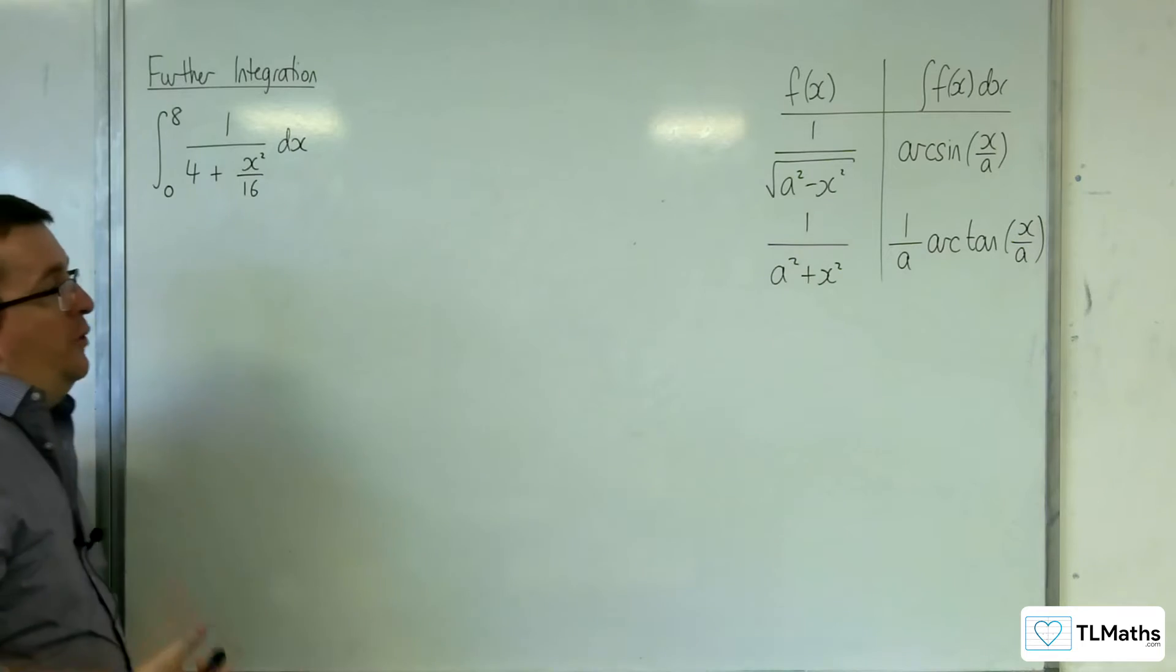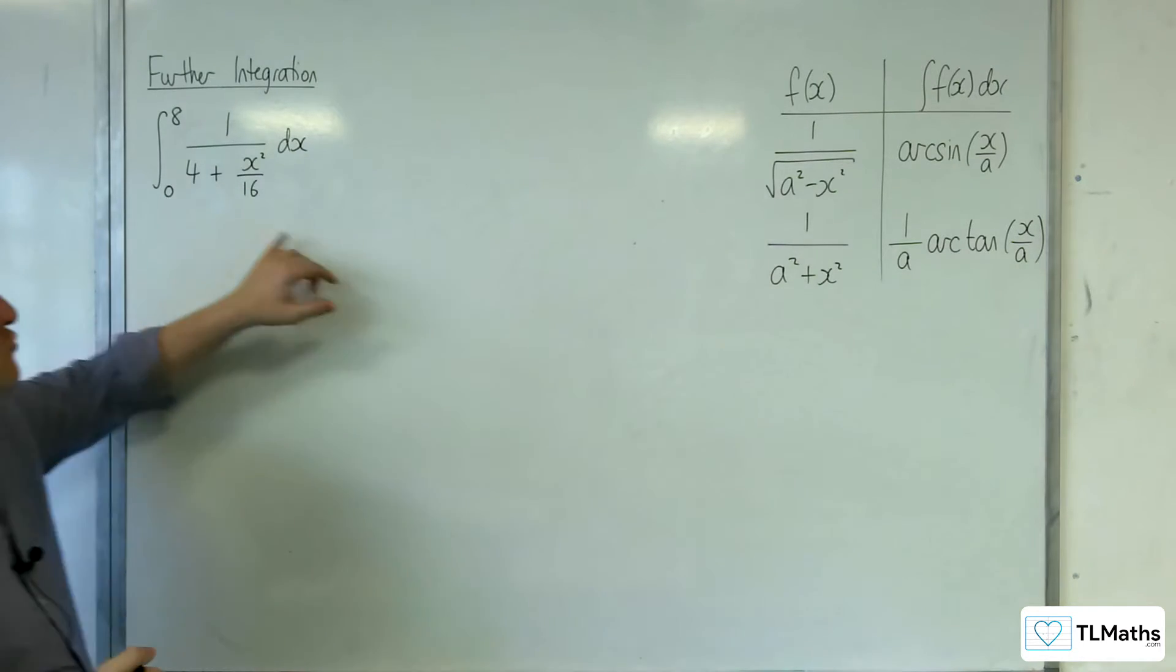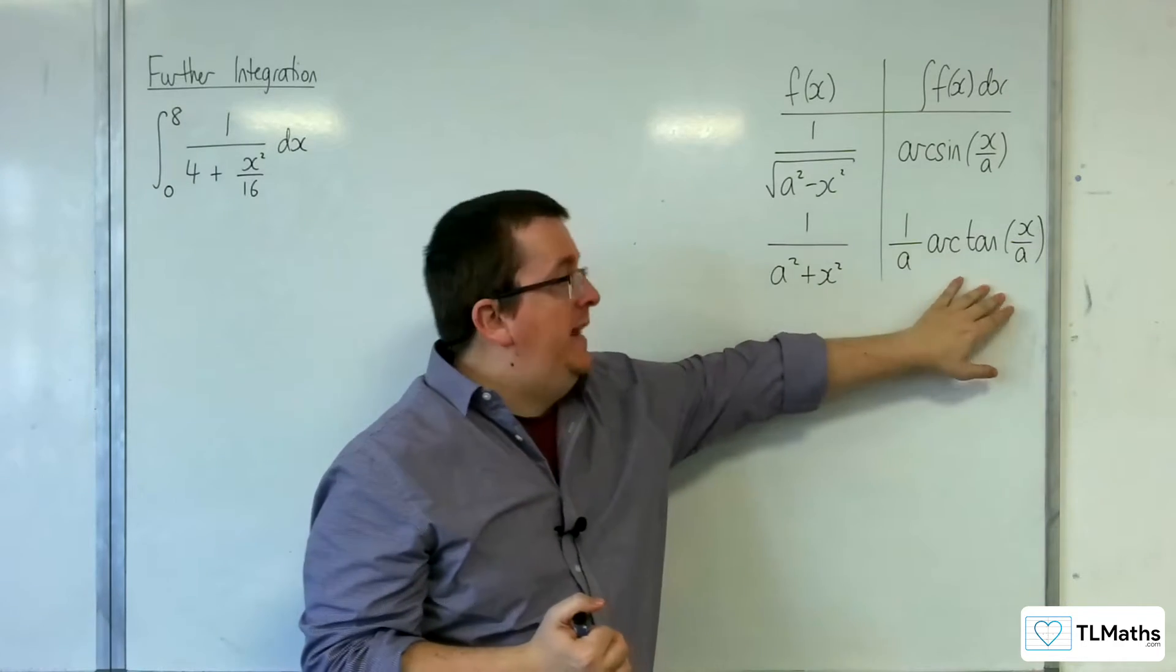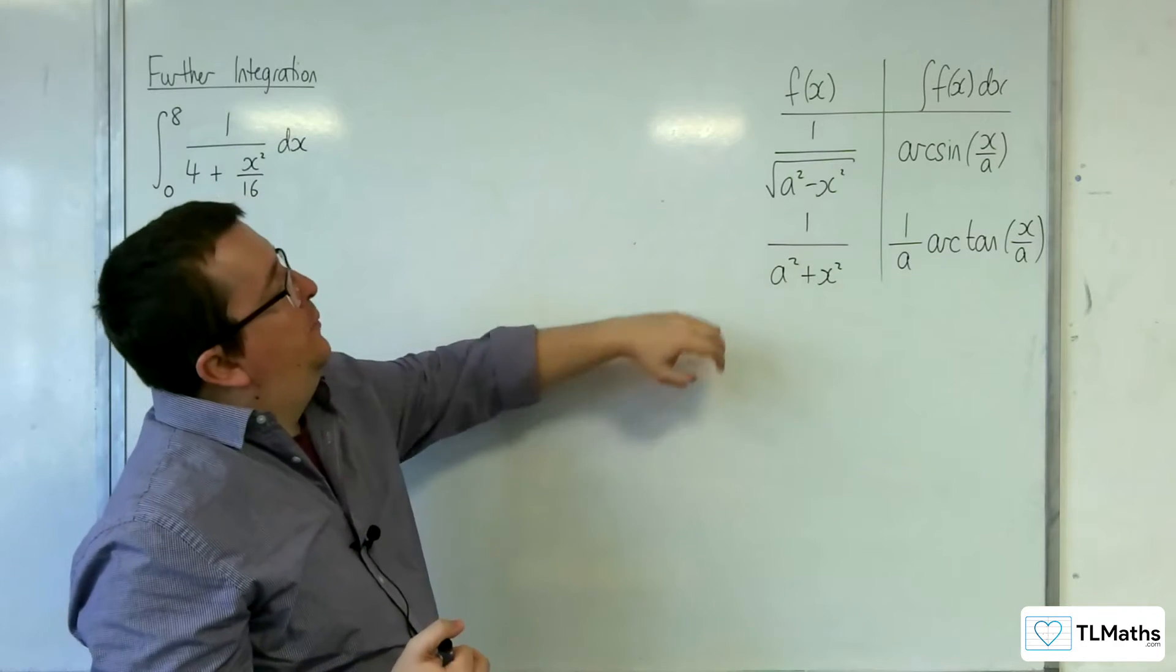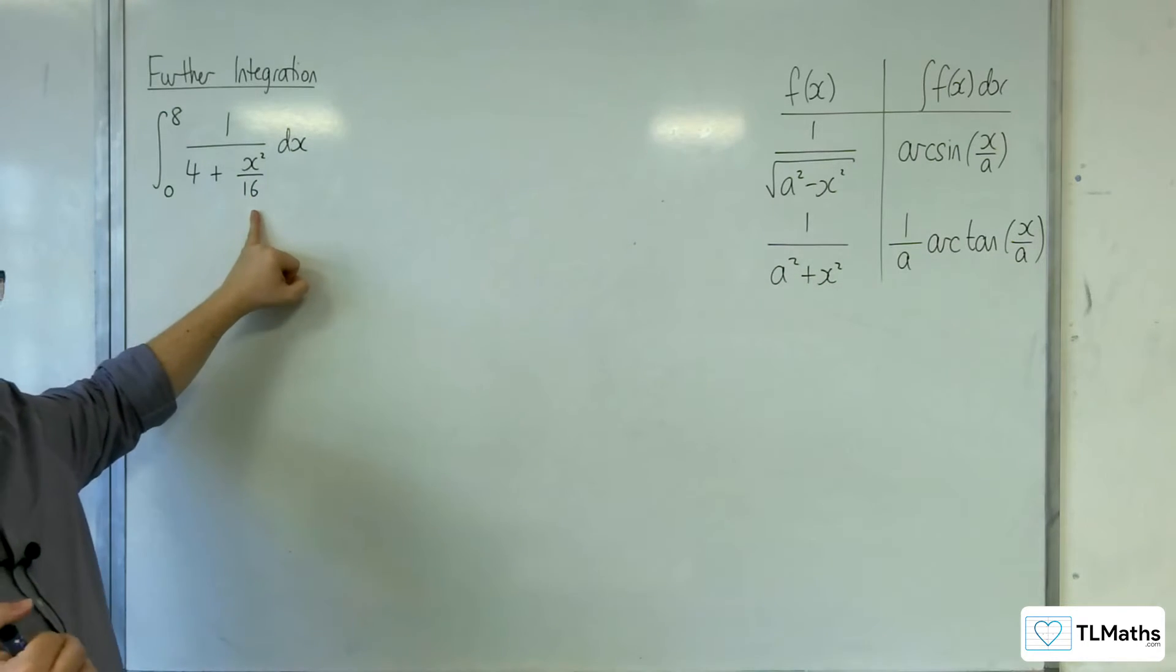So the first thing that we want to do is we want to get it into the correct form. And because we don't have the square root, we're going to be getting this arctan. So what we want to do is make sure that we've got the coefficient of x squared to be 1. In this case, it's 1 over 16.